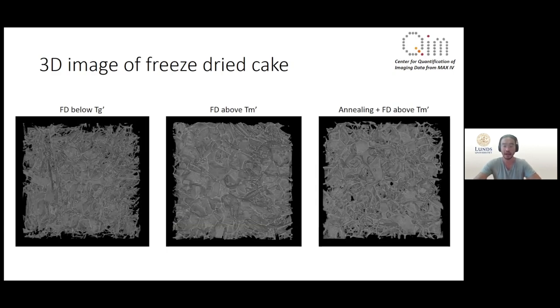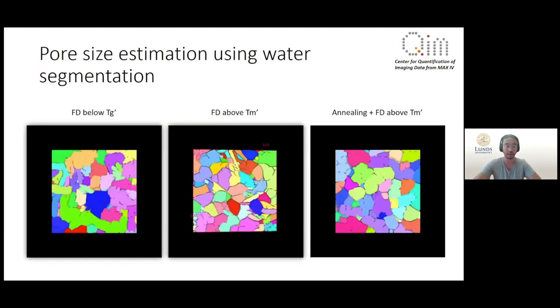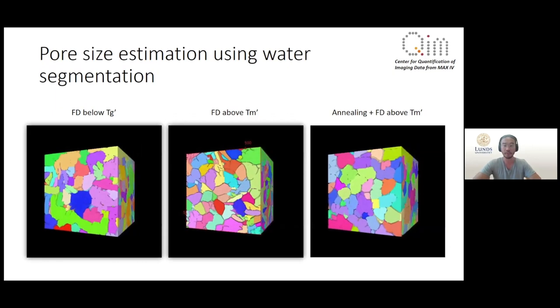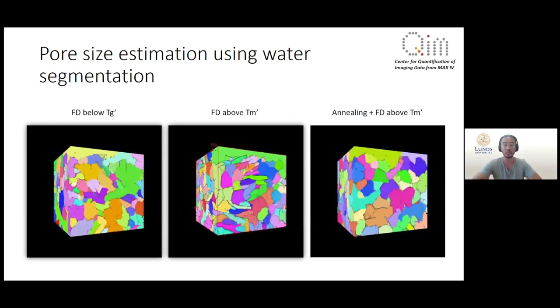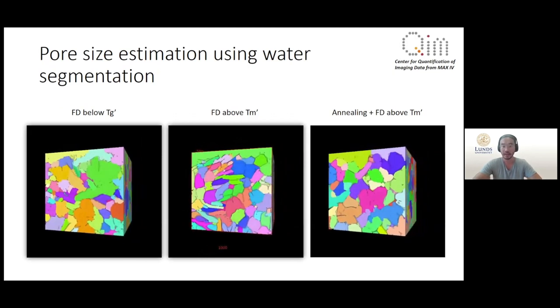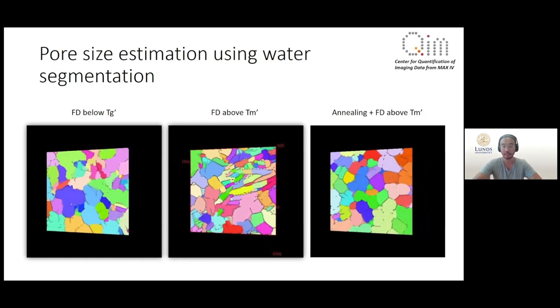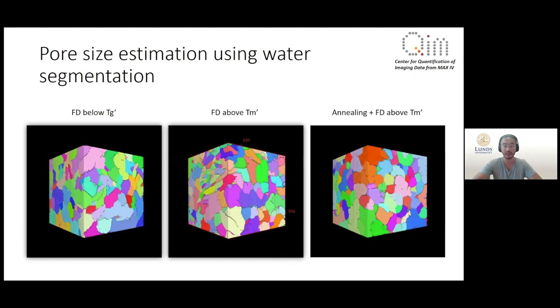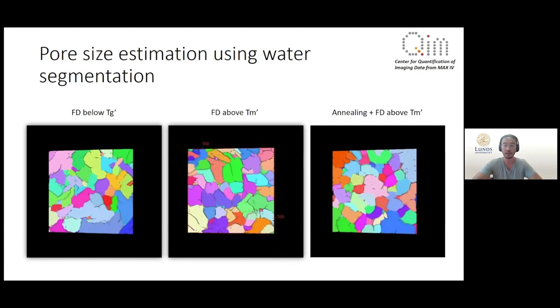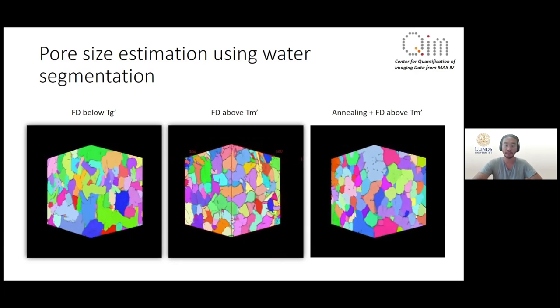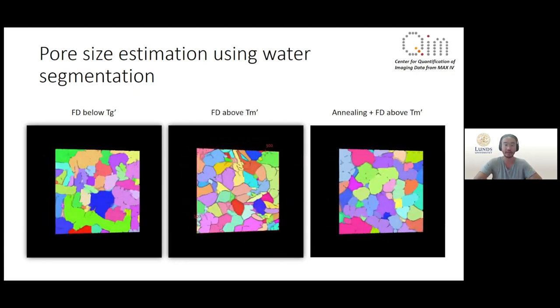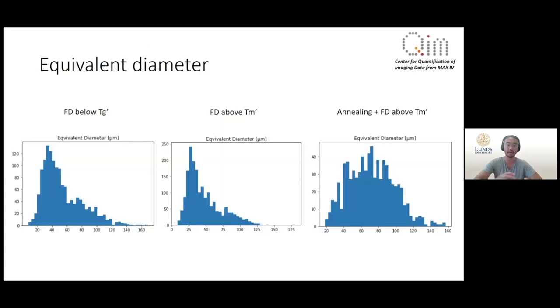But let us start by looking at the pore size of these freeze-dried materials. The pore size is analyzed using a method called watershed segmentation and we can see the different pores represented by the different colors here. But it's still quite difficult to see any major differences between the structures. So what we can do is plot the amount of pores with the equivalent diameter and we obtain a graph that looks something like this.